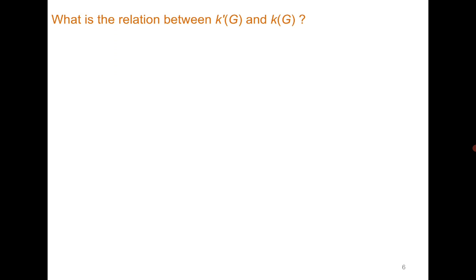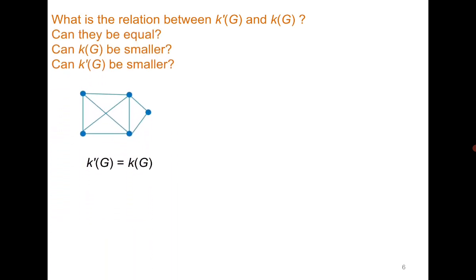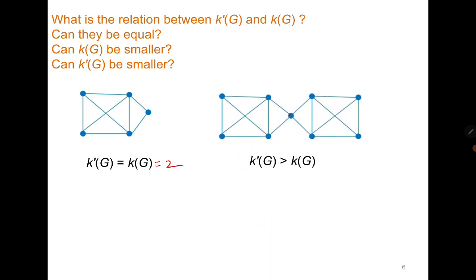Similarly, we can think about the relation between vertex connectivity and edge connectivity. In the first example, it does not have a cut vertex or cut edge, so both vertex connectivity and edge connectivity are 2. But in the second example, it has a cut vertex, so the vertex connectivity is 1 while the edge connectivity is 2. From all these examples, we can reach the following observation, which is known as Whitney's theorem.